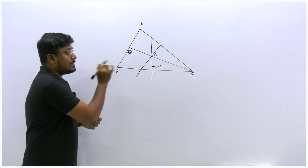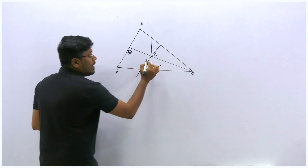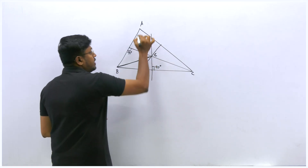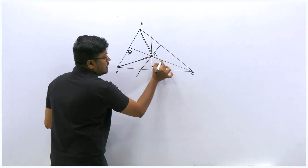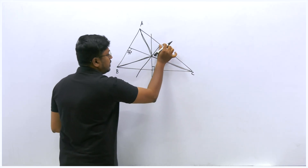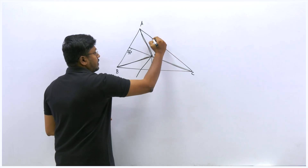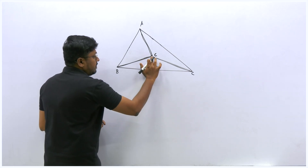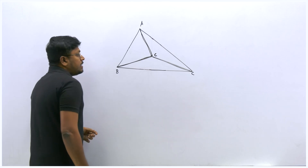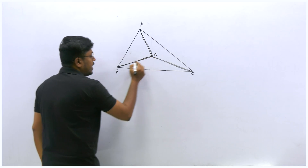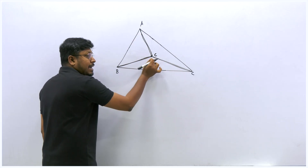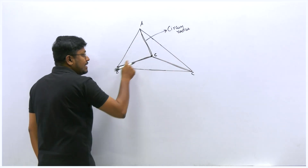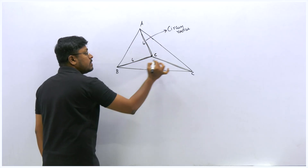An important note: after drawing the circumcenter, connect the circumcenter point to each vertex of the triangle—from B to the circumcenter, A to the circumcenter, and C to the circumcenter. If we erase the perpendicular lines and keep only these connecting lines, each of these lines is called the circumradius. All three lines will be of the same length—if one is 6 cm, the others are also 6 cm.